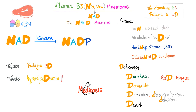What is the clinical use of niacin? Two uses: it can treat pellagra — hashtag 3D: diarrhea, dermatitis, dementia — and it can treat hyperlipidemia. It treats pellagra at a low dose, and it treats hyperlipidemia at a high dose.